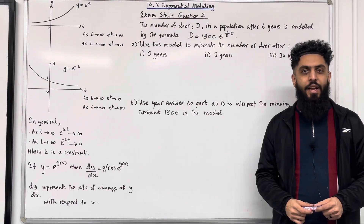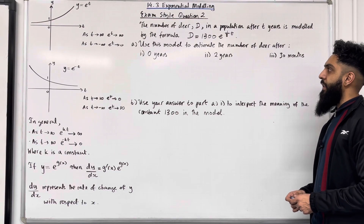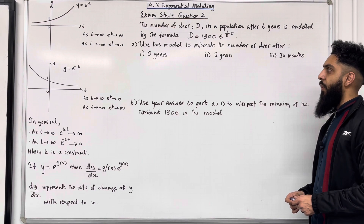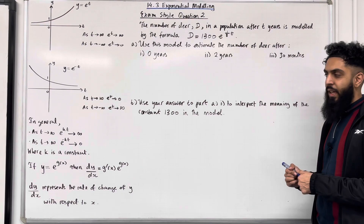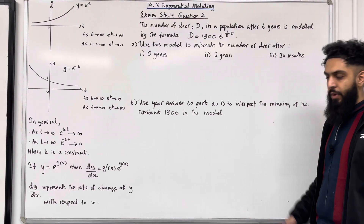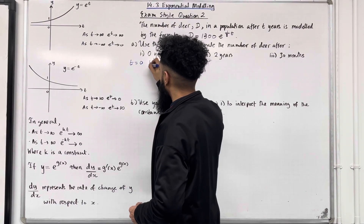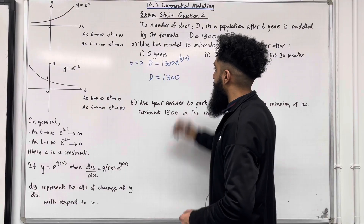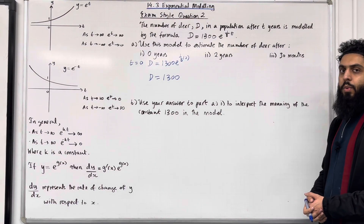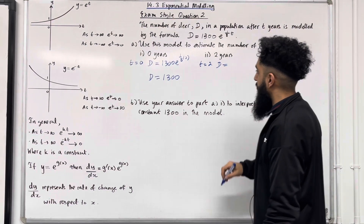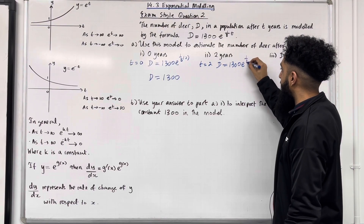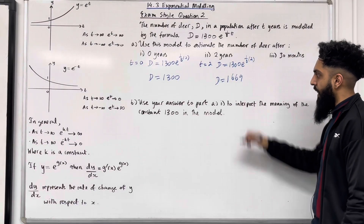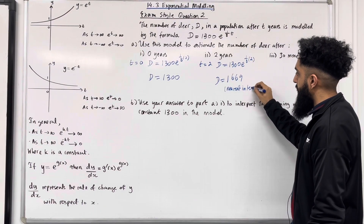Exam-style question two: the number of deer D in a population after t years is modelled by D = 1300e^(t/8). Part a: estimate the number of deer after (1) zero years, (2) two years, (3) 30 months. For part 1, t = 0: D = 1300e^0 = 1300. For part 2, t = 2: D = 1300e^(1/8 × 2), which gives 1669 to the nearest integer.